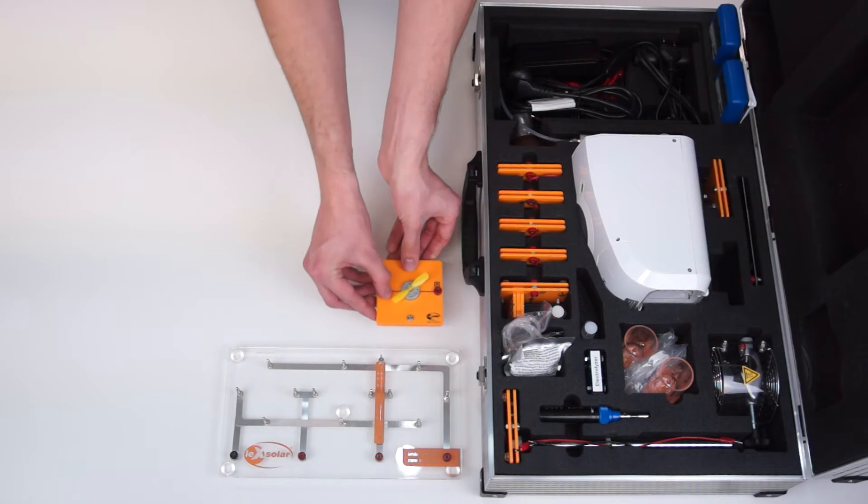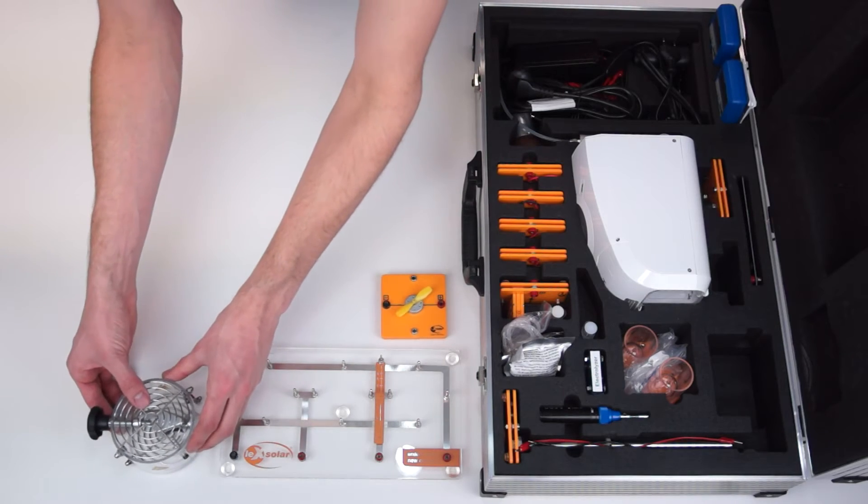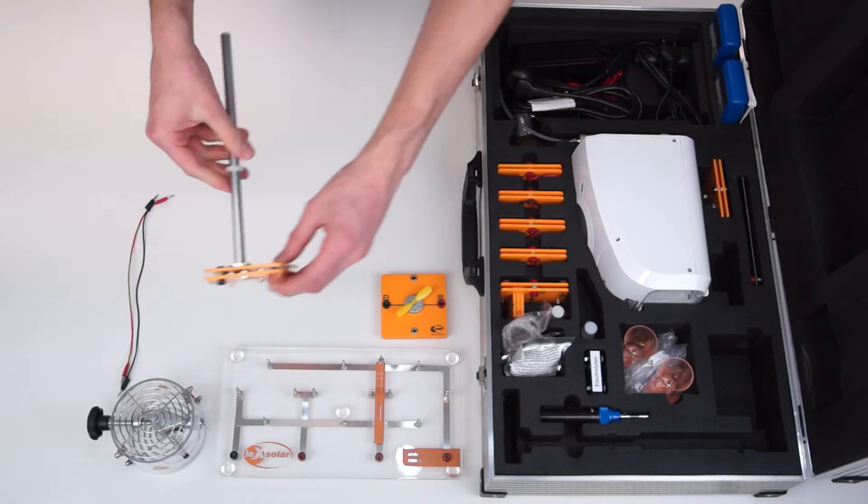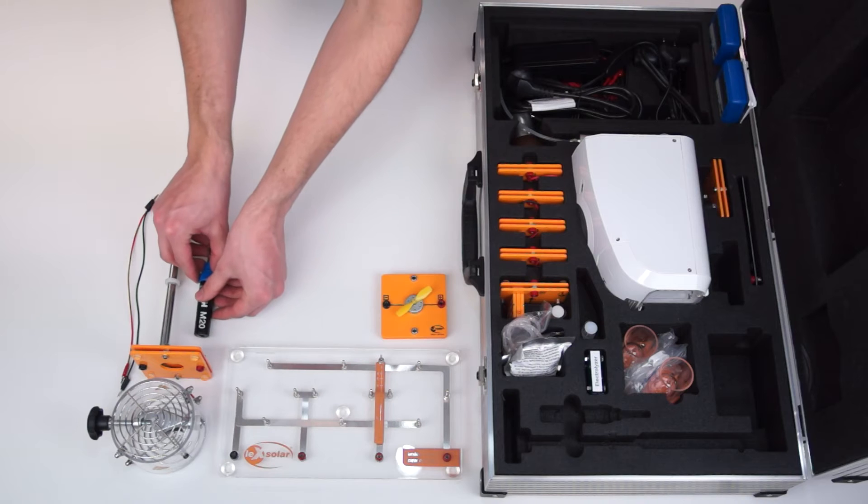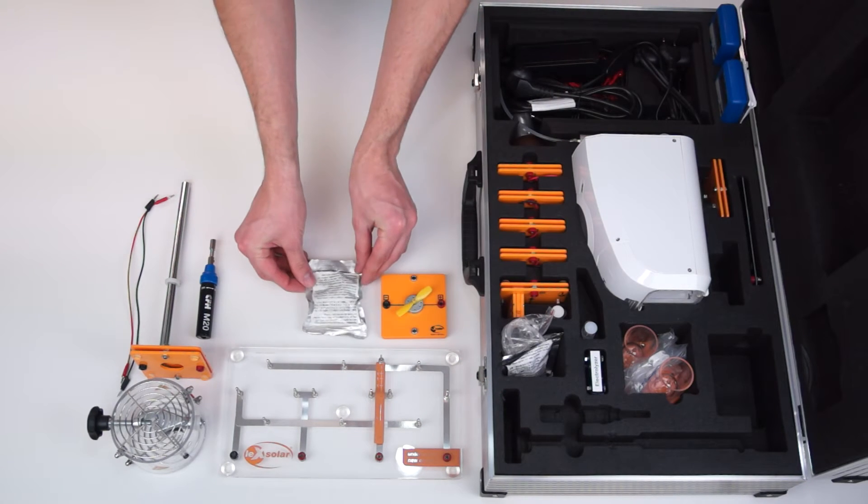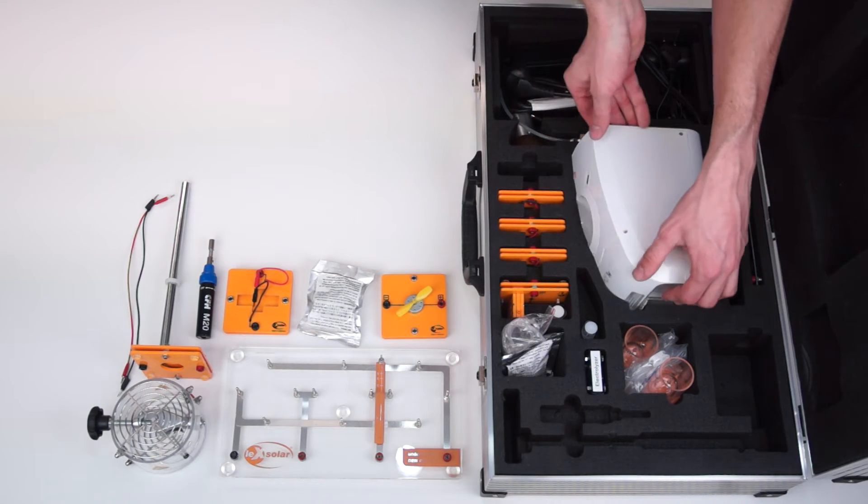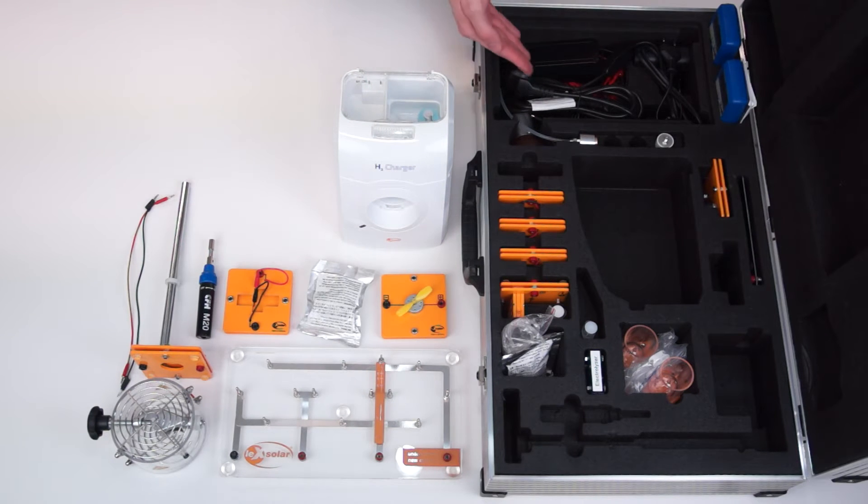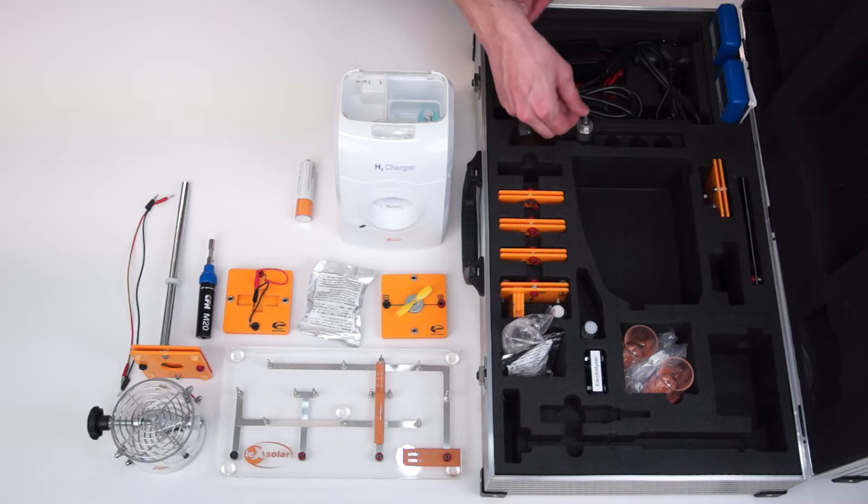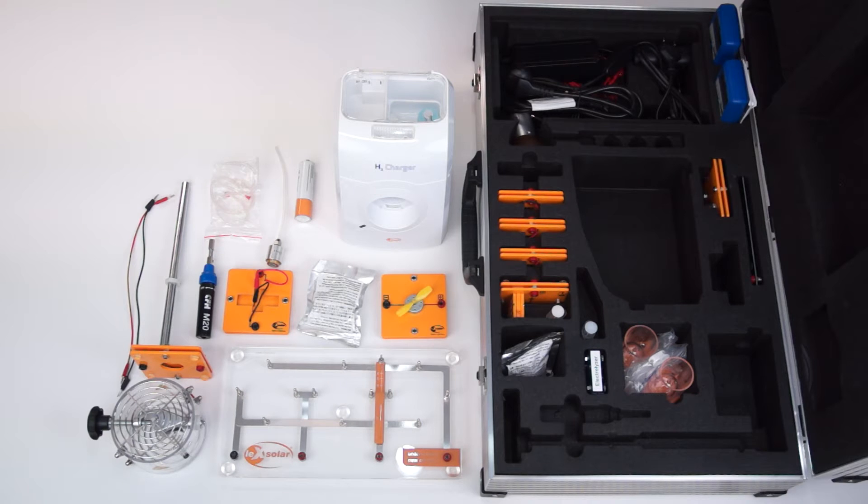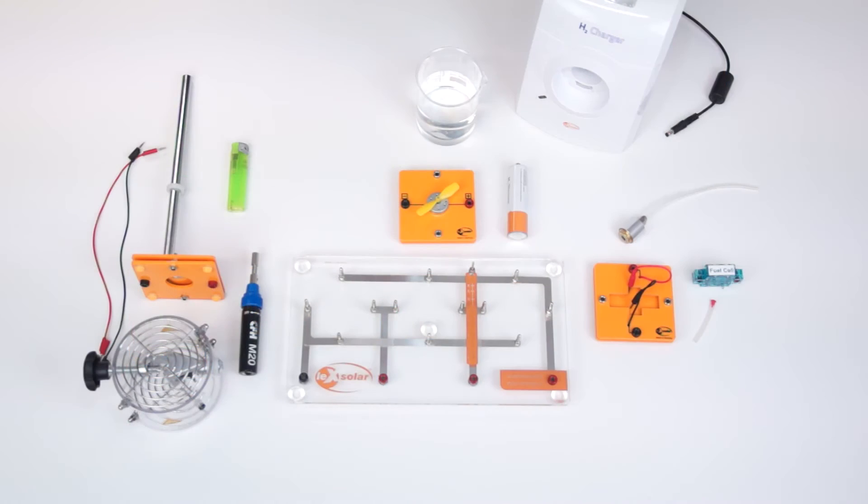Furthermore we need the motor module, the SOFC fuel cell with cables and stand, the gas burner, the PEM fuel cell and protective packaging, the associated module, the H2 charger with power supply, and an H2 storage with valve and hoses. In addition a lighter and distilled water is also required. Now we have all the equipment to assemble the experiment.